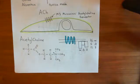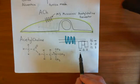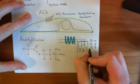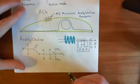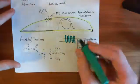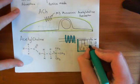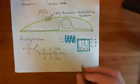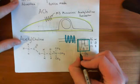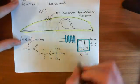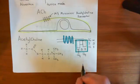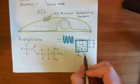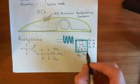Heterotrimeric G-proteins are named after which alpha subunit is used. If this is a GQ heterotrimeric G-protein, it means the alpha subunit is an alpha-Q subunit specifically. The name does not tell us what the beta and gamma subunits are — it only tells us what the alpha subunit is.